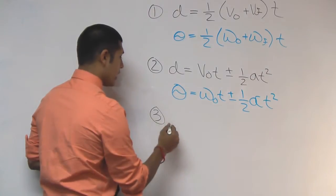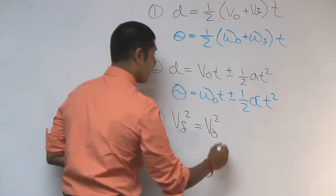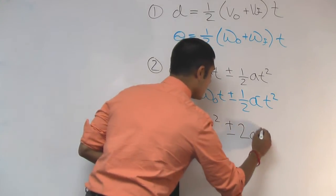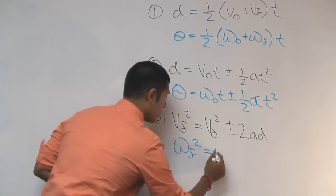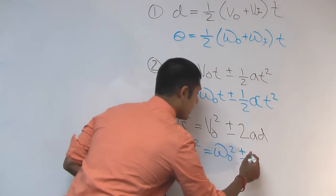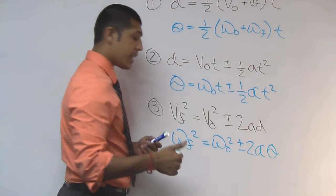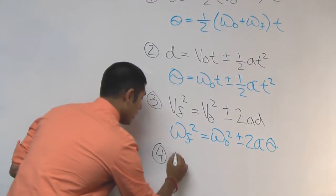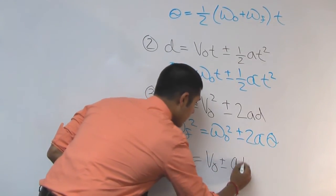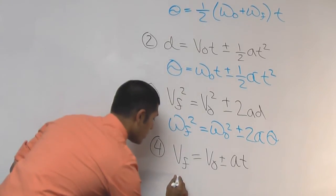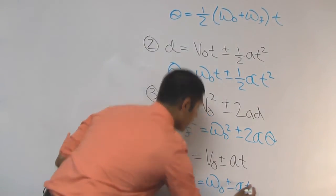And two more equations. The third one is v final squared equals the initial velocity squared plus or minus 2 ad. And the rotational equation will be omega final squared equals omega initial squared plus or minus 2 alpha times theta. And finally, the last equation is v final equals v initial plus or minus at. And rotationally, that becomes omega final equals omega initial plus or minus alpha times time.